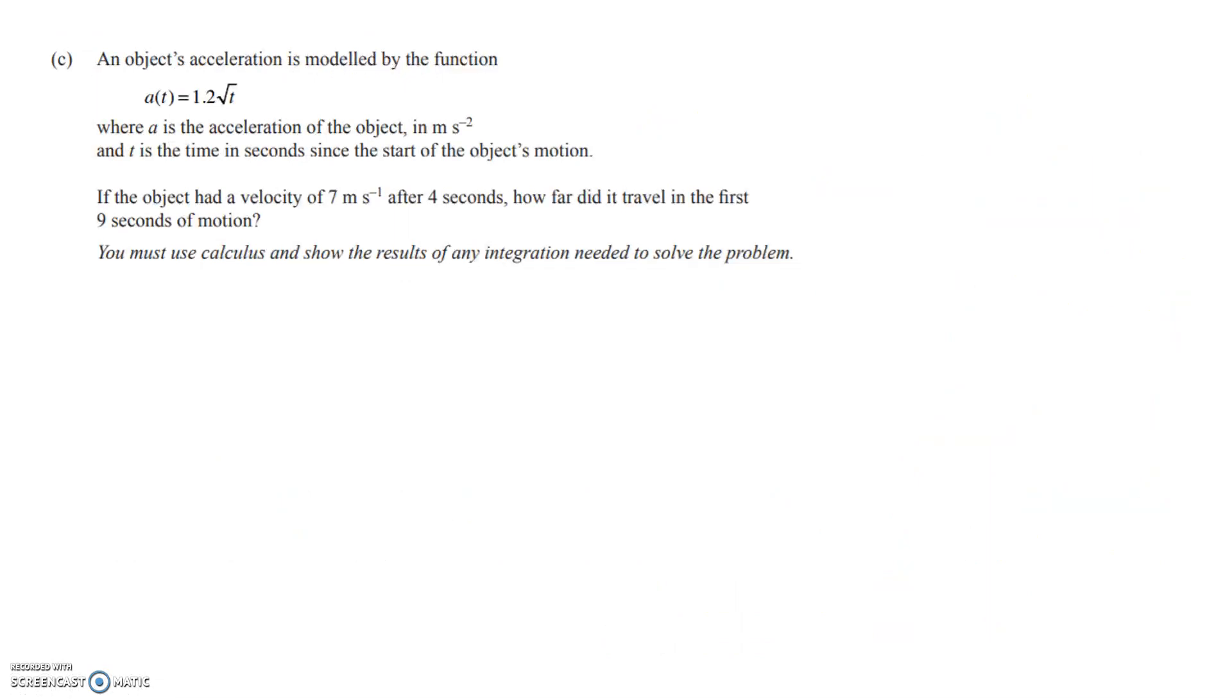Right, the last question in here is a merit question. And it's a little kinematics question. Not really anything you couldn't have done at level 2. You just have to move slowly through it. And remember that when we're working with kinematics, we've got distance, and we've got velocity, and we've got acceleration. And we differentiate to get from 1 to the next. And that's what we're going to do here. Just read carefully. Acceleration is modelled by this function. And t is given as the time in seconds since the start of the object's motion. Now that's useful because it tells me that s of 0 is equal to 0. That's almost always going to be the case. But it's always worth thinking about. So the object had a velocity of 7 metres per second after 4 seconds. So we can write v at 4 is equal to 7. And we need to find how far it travelled in the first 9 seconds of motion.